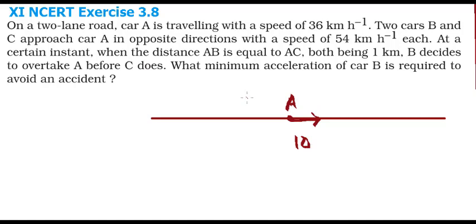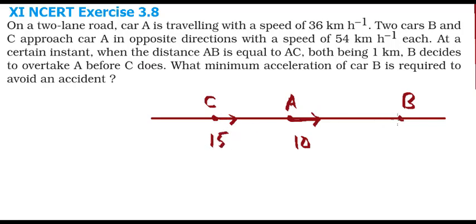Now there are two other cars, B and C. They are approaching car A from the opposite direction. If this is car C, then this is car B. They are travelling at 54 km/h, which converts to 15 m/s. So they are approaching at 15 m/s.